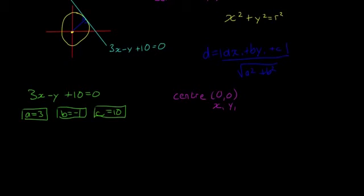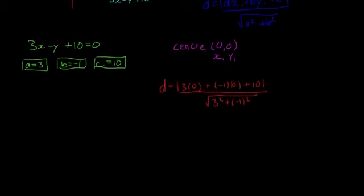So I'm going to find d now. We're going to have d equals ax1, which is 3, by x1, which is 0, plus by1, so that's minus 1 by 0, and then plus c, which is plus 10. Modulus around that. And that's divided by 3 squared plus minus 1 squared.